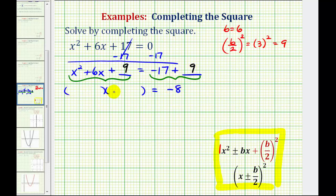And now the first terms of the binomial factors will be the factors of x squared, which are x and x. And now we want the factors of positive 9 that have a sum of positive 6, which would be 3 and 3. So we have plus 3 here and plus 3 here. So notice how we have two equal factors, verifying that this is a perfect square trinomial. And we can write this as the quantity x plus 3 squared equals negative 8.